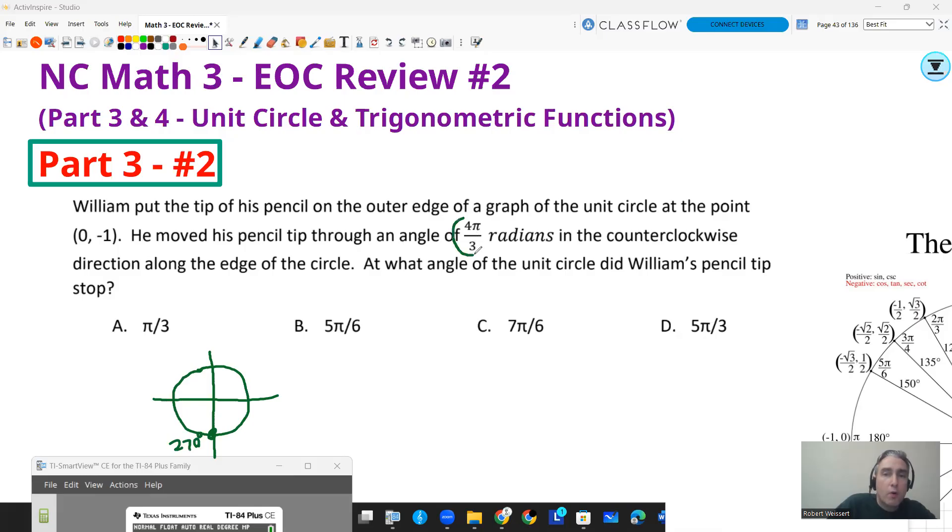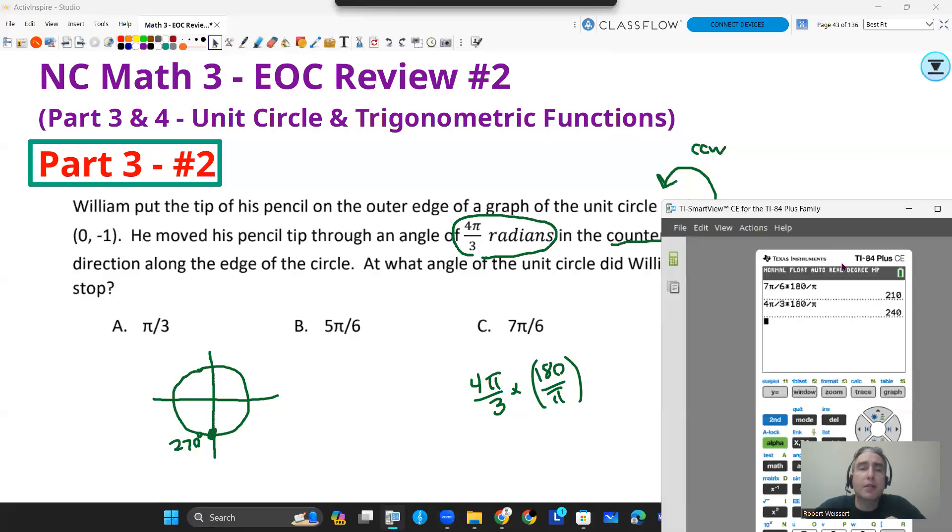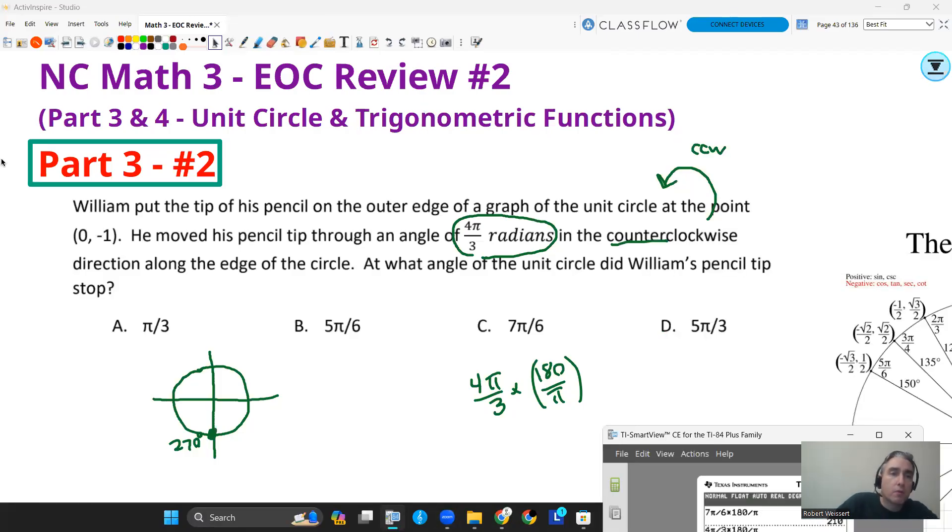Now I want to move 4π over 3 radians counterclockwise, that's this way. So I want to take my 270 and go this way. But 4π over 3 radians doesn't really resonate with me. I want to know what that is as a degree. So I'm going to take that 4π over 3 and times that by 180 over π. Throw that in your calculator, see what you get. Well, that gives me 240 degrees. So as a degree, that's a little bit easier to work with in terms of moving around. I know that's 240 degrees.